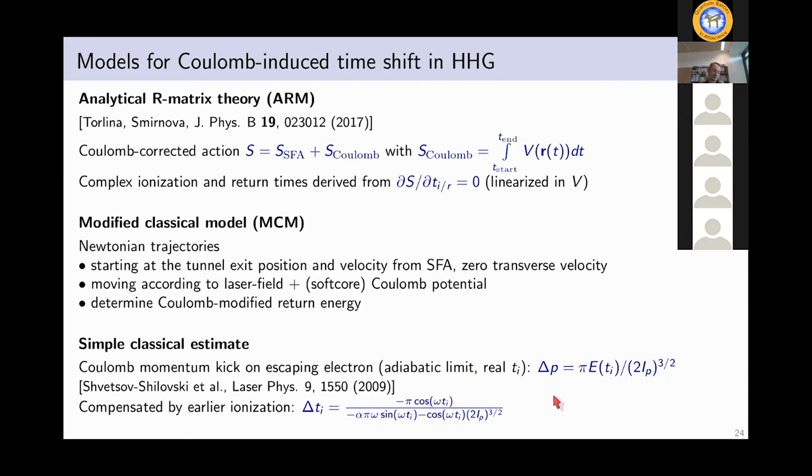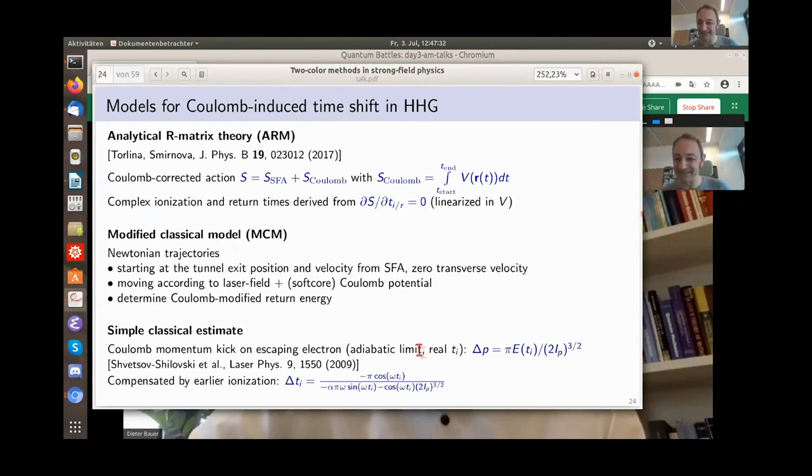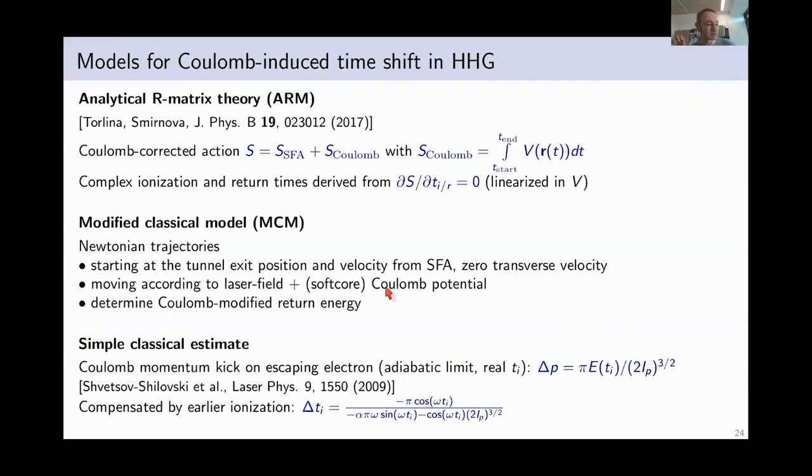And the last one is the simplest one and let me explain that briefly. In the attoclock, or in general, if you ionize with a low frequency field, there's actually a very simple way to estimate the Coulomb effect on the outgoing electron. In the adiabatic limit, so for a slowly varying field, Nikolai Shvetsov-Shilovsky has actually derived many years ago this simple formula. That's the momentum kick on the escaping electron in the presence of the Coulomb field. It's proportional to the electric. I think I got thrown out exactly at this point. So now you can hear me and see me and see the screen? Yes. Okay, very good. Okay, I will do it quickly.